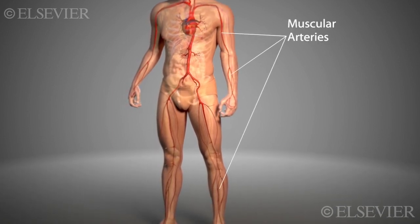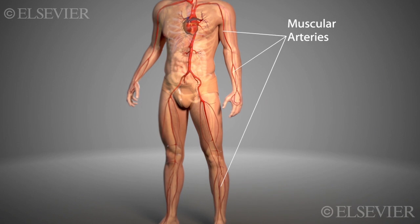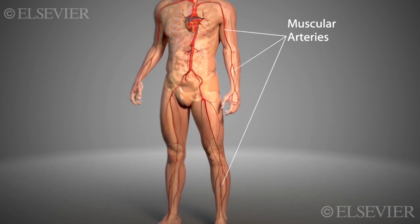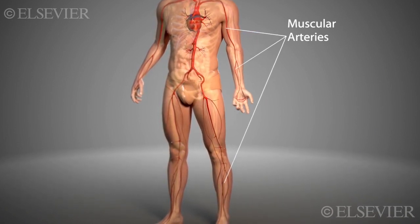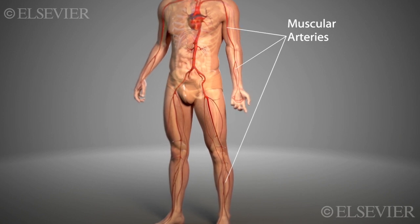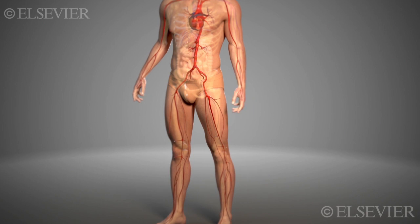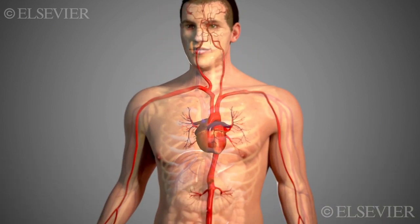Muscular or distributing arteries carry blood further away from the heart to specific organs and areas of the body. They are smaller in diameter than elastic arteries, but the smooth muscle in their tunica media is thicker because they distribute blood by contracting and relaxing.